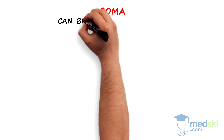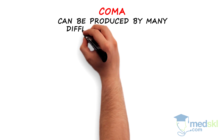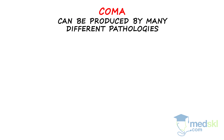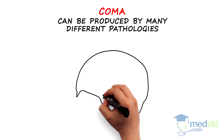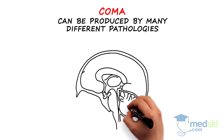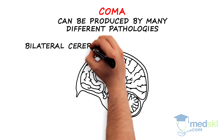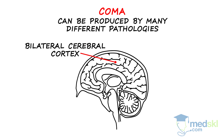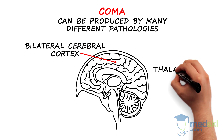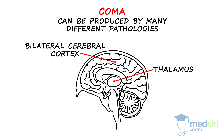Coma is a clinical syndrome that can be produced by many different pathologies. There are three key regions in the brain that may be affected to produce coma: the bilateral cerebral cortex, the thalamus, and the brainstem.